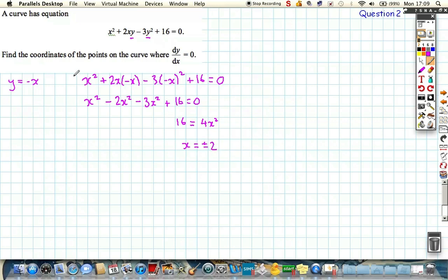We want to find the coordinates of the points, so we need to find out the y coordinate as well, and we're going to use this. y is equal to minus x, so that means that y is equal to minus or plus 2. Now it's important you get it that way around, because when x is plus 2, y is minus 2, and when x is minus 2, y is the negative of that, which is plus 2.